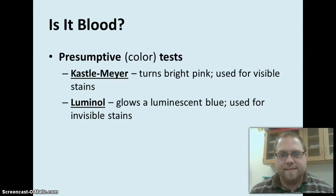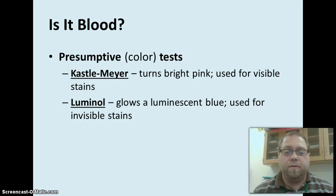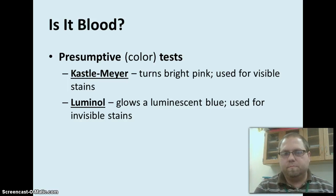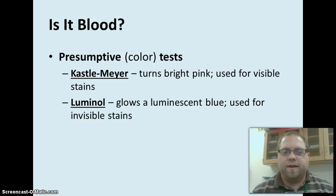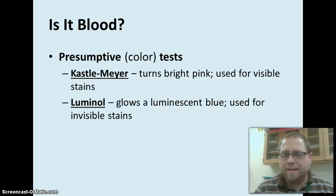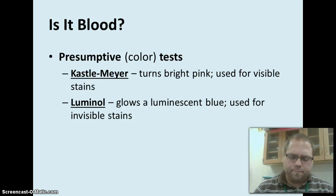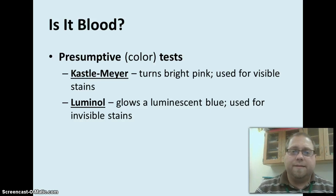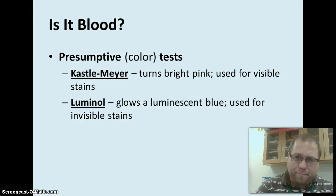When we talk about a presumptive test, a presumptive test is where you are assuming something is blood. This test can tell you, within a reasonable doubt, if the substance is blood so that it can have further testing. There are two main ways to do this — we call these color tests. One is the Kasselmeyer test: you spray it onto a stain and it turns bright pink, used for testing visible blood. And then Luminol, which we'll look at in class, actually glows a luminescent blue. This would be used if you have a stain that's been cleaned up — even if somebody used bleach — where you can see residual stains sometimes years after the fact using Luminol.